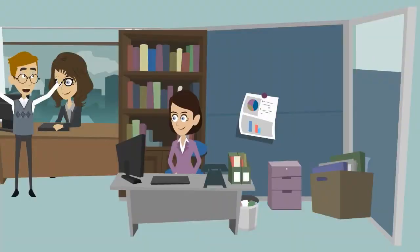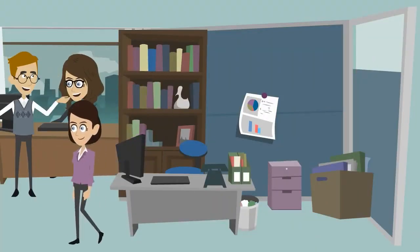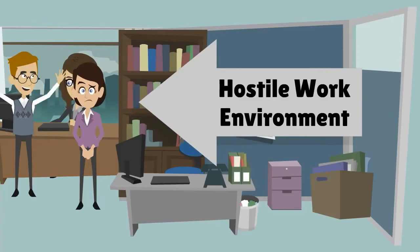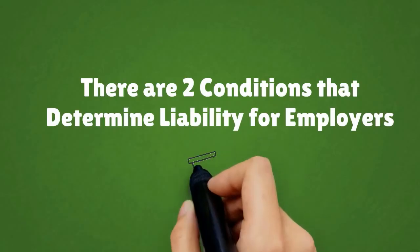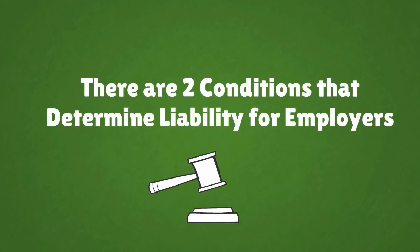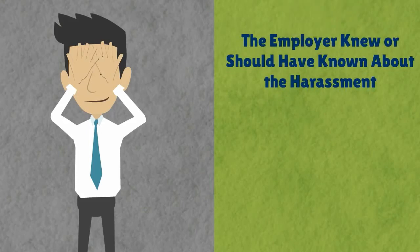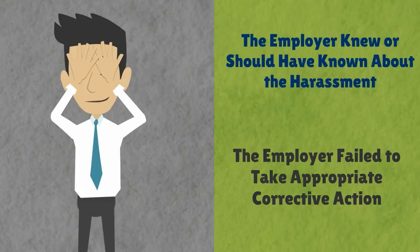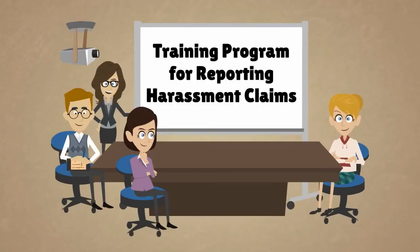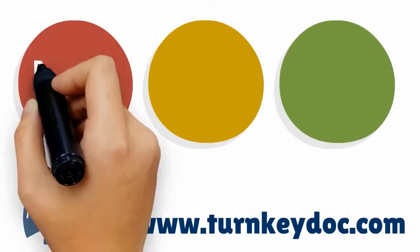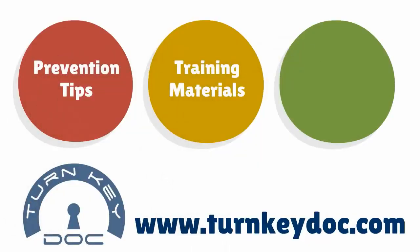For example, repeated sexual comments that make someone so uncomfortable their work performance suffers or they decline professional opportunities to avoid the harasser. In both types of harassment, employees must prove the conduct was offensive to someone — not necessarily the intended victim. Employers are liable if they knew or should have known about harassment and failed to take corrective action. Having a training program and clear reporting procedures can shield employers from expensive lawsuits. Visit TurnkeyDoc.com for more tips on preventing sexual harassment and a complete library of company policy and procedures.